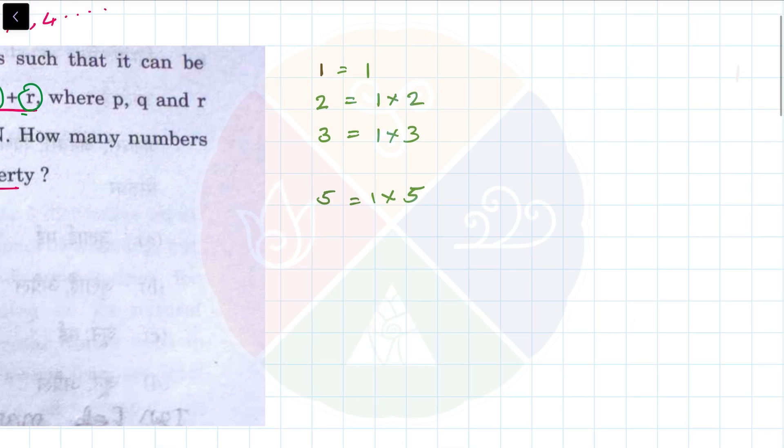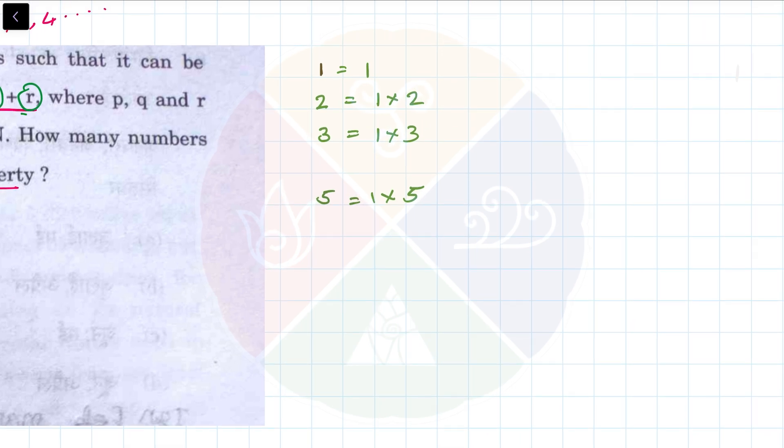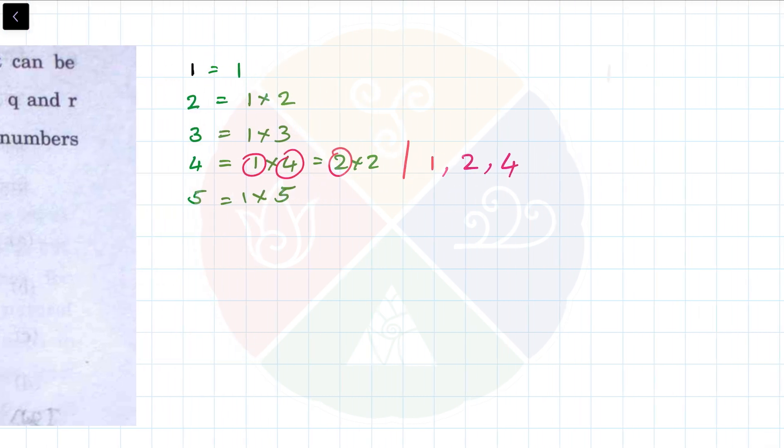When you look at 4, it can be expressed as 1 times 4 or 2 times 2. The factors of 4 are 1, 2, and 4. There are only three factors for the number 4. I cannot add them to make a number equal to 4 because 4 itself is the number. So even that is not possible.